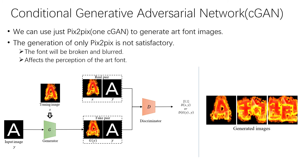At the beginning, we only used one CGAN model named Pix2Pix to generate AdFont images. However, the generation using only one CGAN is not satisfactory. The font will be broken and blurred, which affects the perception of the AdFont.